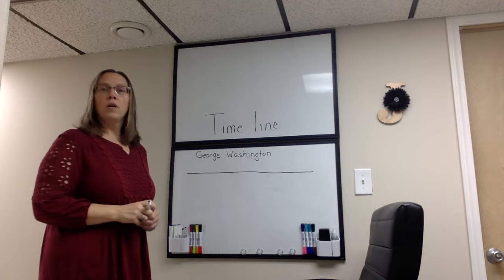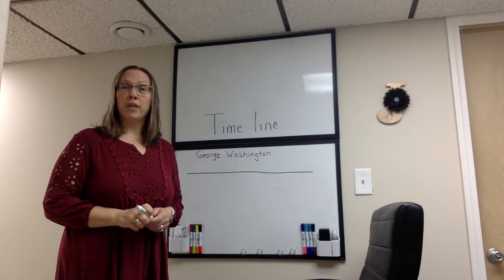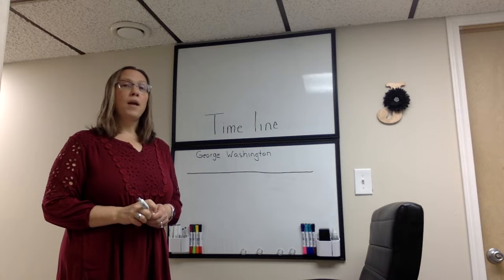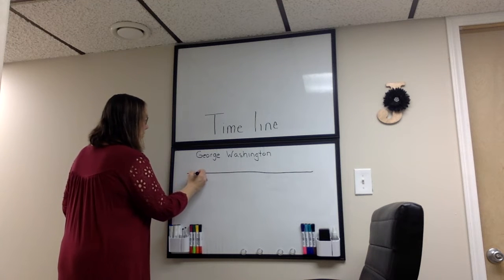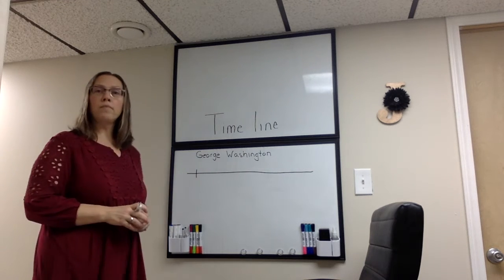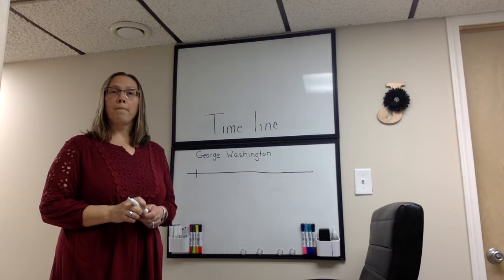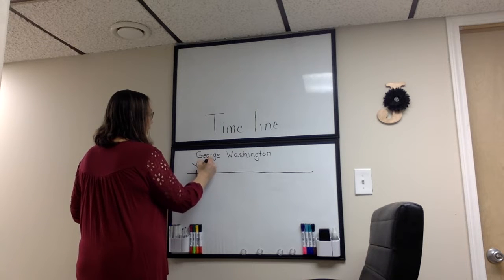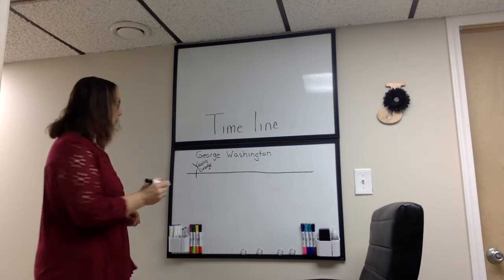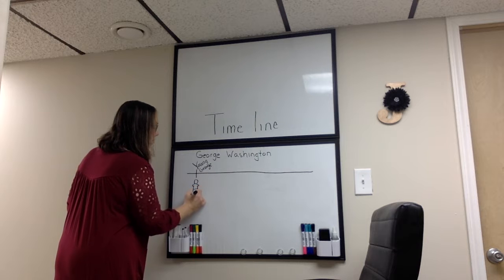We learned first about George Washington in the story — the legend about him as a young boy in the cherry field with his father. So I'm going to make the first mark on my timeline. And what did Mrs. Johnston say our first mark was going to represent? That's right — it was young George. So I'm going to write 'young George' on our timeline, and then I'm going to draw a picture of George as a young boy to represent him during that time.